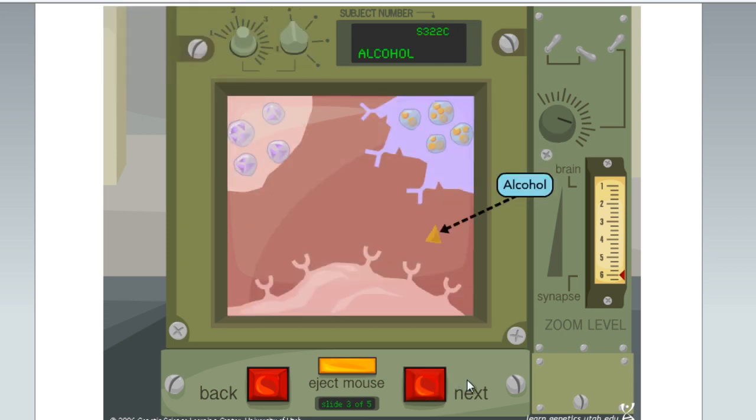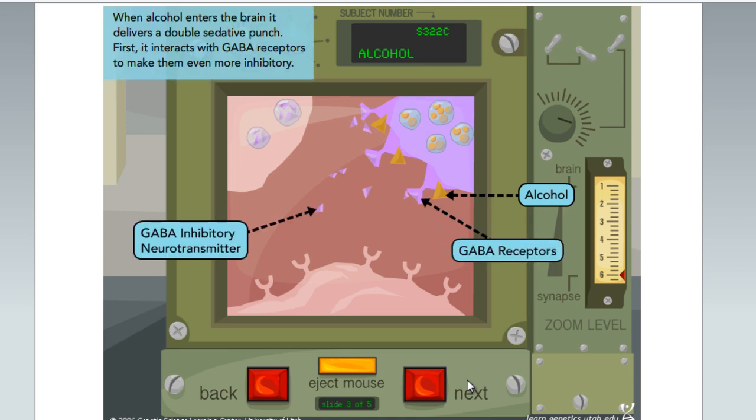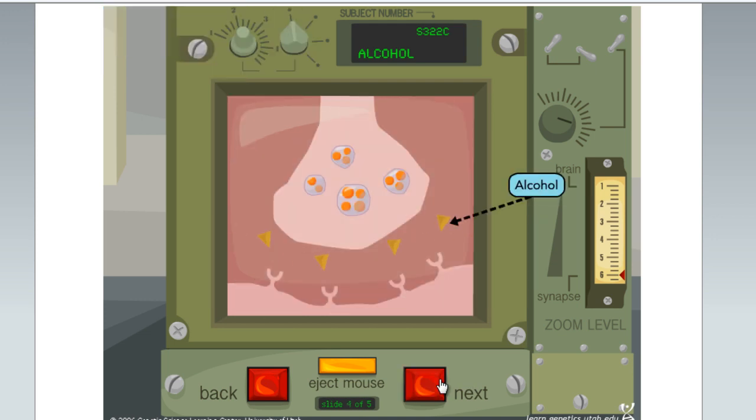When alcohol enters the brain, it delivers a double sedative punch. First, it interacts with GABA receptors to make them even more inhibitory. Second, it binds to glutamate receptors, preventing the glutamate from exciting the cell.